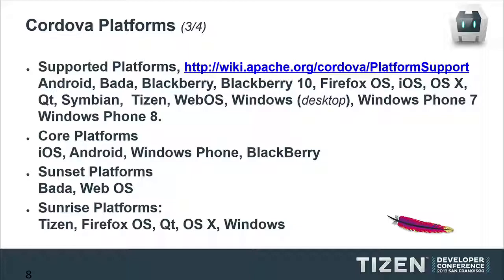The community is defining a notion of core platforms and Sunrise platforms. Core platforms are those included in the monthly release — iOS, Android, Windows Phone, and BlackBerry. WebOS is still in the core platforms but should be removed. Sunset platforms are Bada and WebOS, for two different reasons.